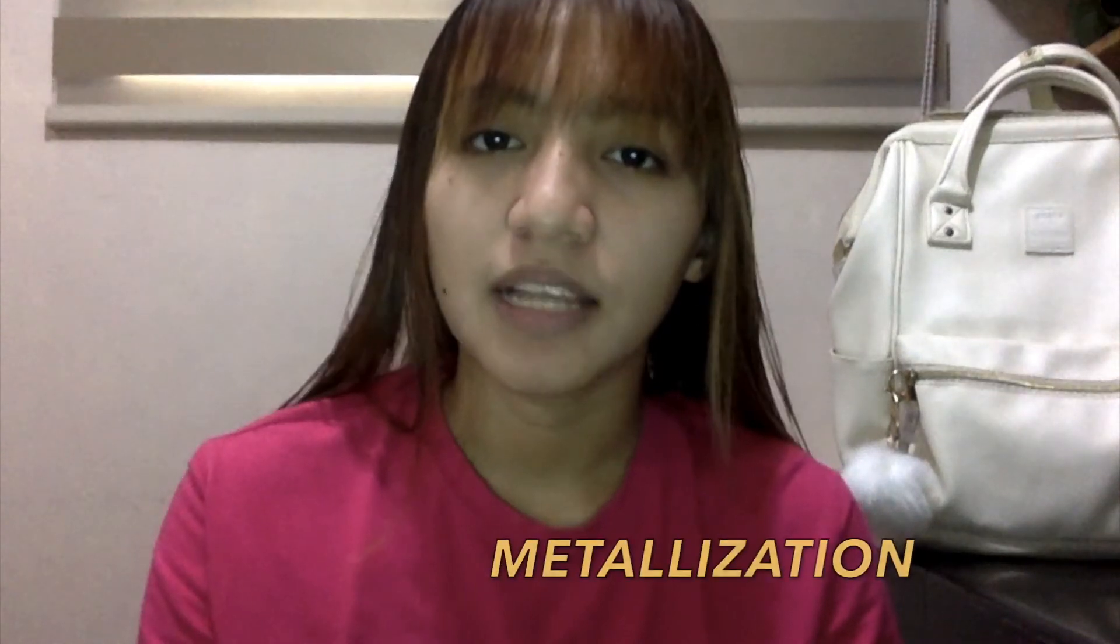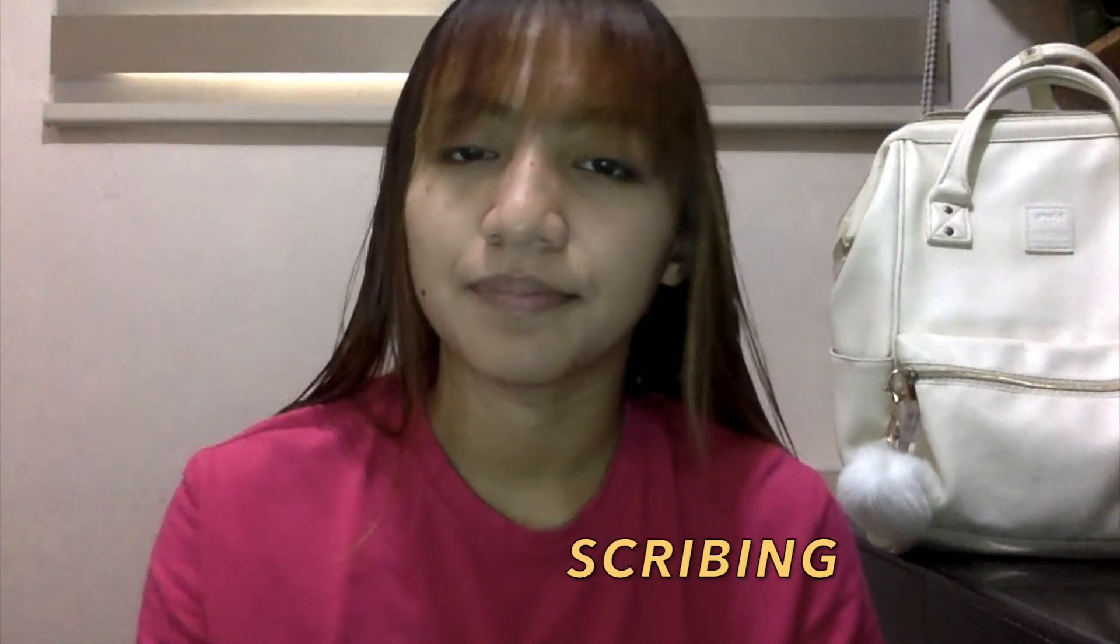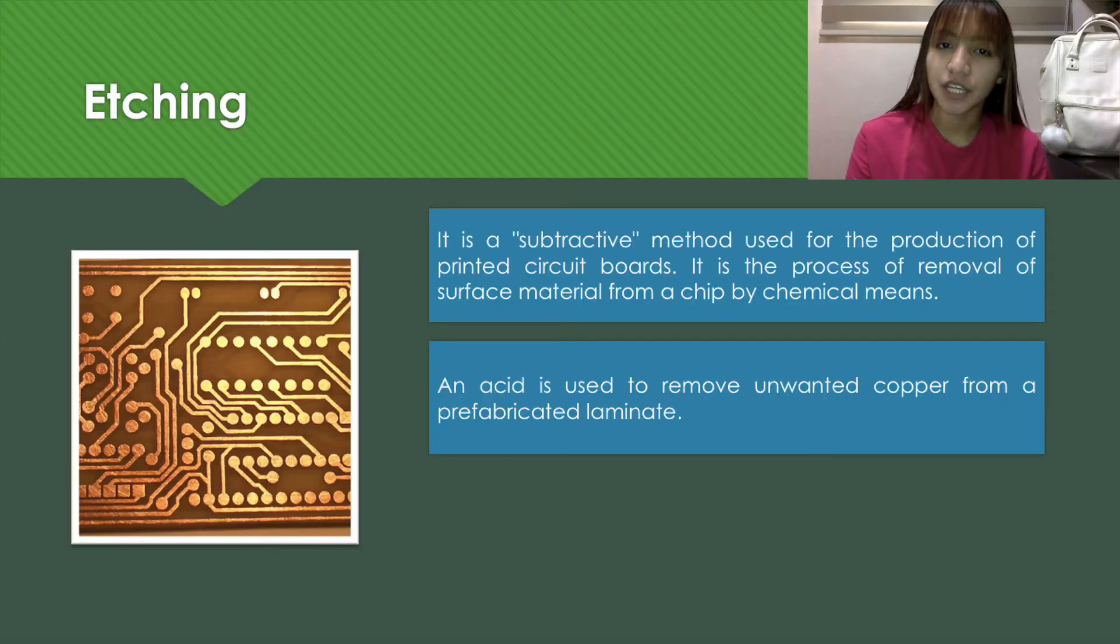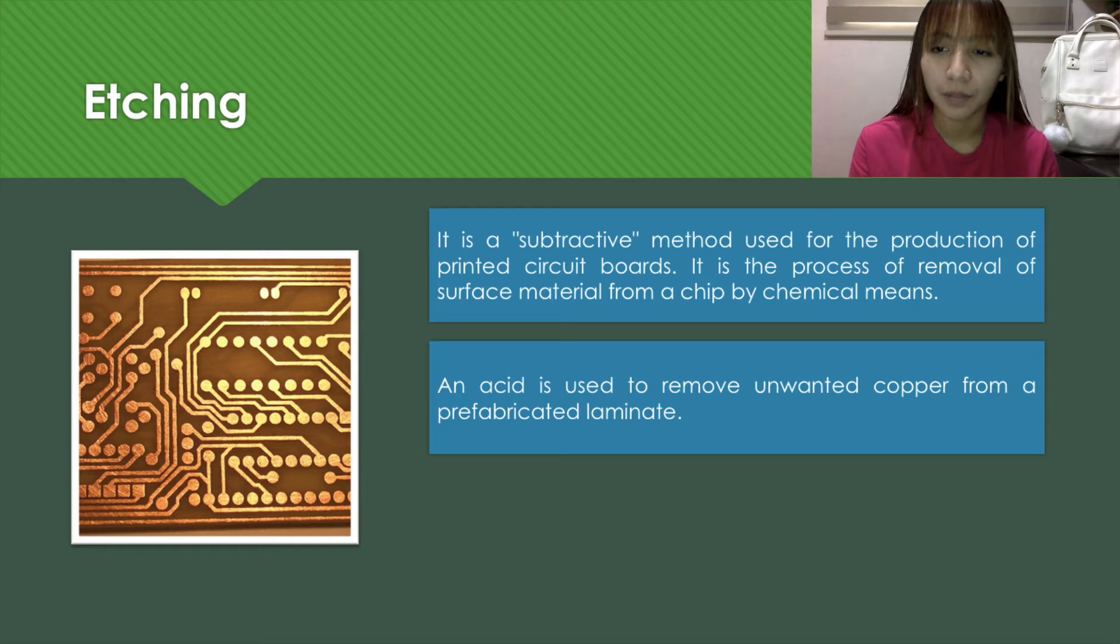I will be discussing the last four terminologies for IC, which are etching, metallization, photoresist, and scribing. Etching is a subtractive method used for production of printed circuit boards. It is the process of removal of surface material from a chip by chemical means. An acid is used to remove unwanted copper from a prefabricated laminate.